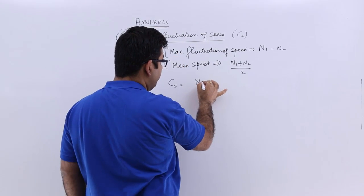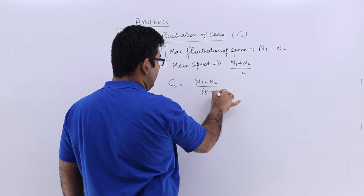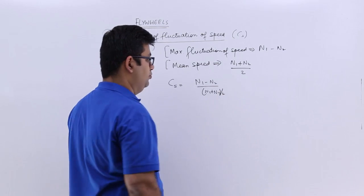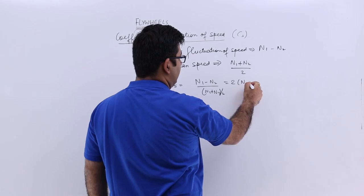So you will have n1 minus n2 divided by n1 plus n2 by 2. So this two counts on top, you will get this.